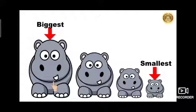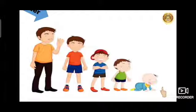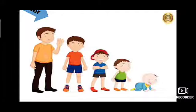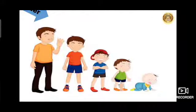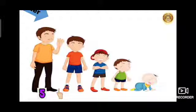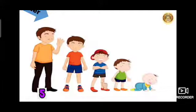Now, children, you understood what is biggest and smallest. Here we have one more picture. In this picture we have a father and his children. The father is the biggest out of all — we have total 5 people here. Papa or father is the biggest in size, so we will give him number 5, because out of 1 to 5, 5 is the biggest number.